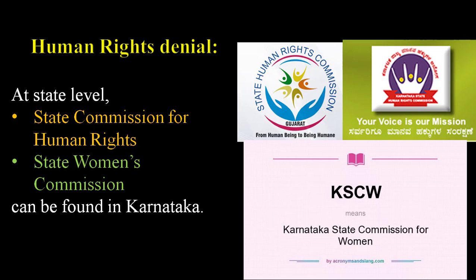These bodies support the UNO, especially to eradicate slavery, ensure equal rights to women, and implement human rights. This is the very important role of India in providing human rights to all citizens of India. That concludes the topic of human rights.